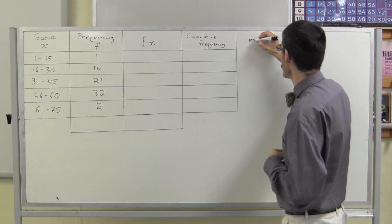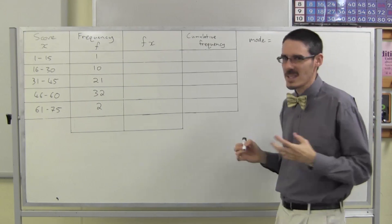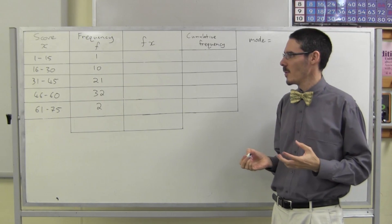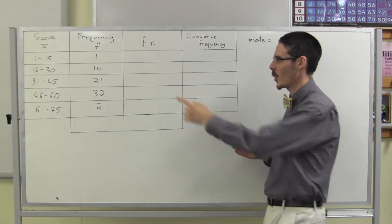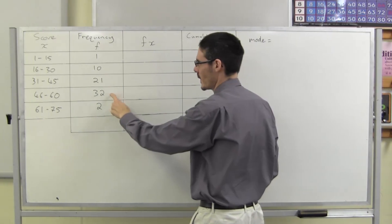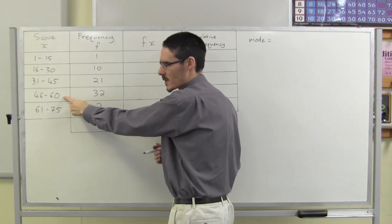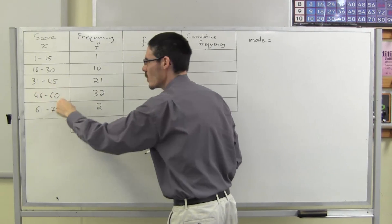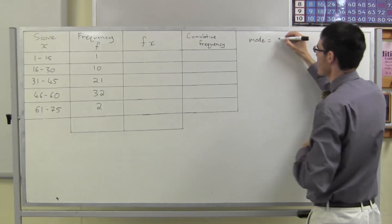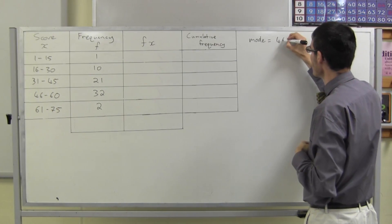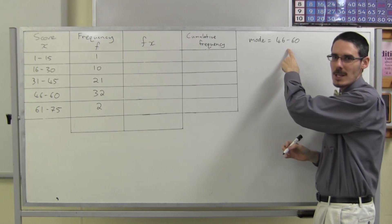I'll start with the mode, as usual, because it's the easiest. Which score has the highest frequency — the most common? This one. But it's not an individual score, is it? It's actually a whole group. We call that a class. It's actually 46 to 60. That's my modal class.